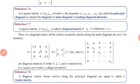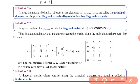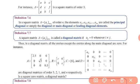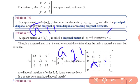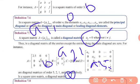Definition of a diagonal matrix: In a square matrix A = [aij], the matrix is called a diagonal matrix if aij = 0 whenever i ≠ j. That means when i = j, the entries a11, a22, a33 are retained, and all remaining entries where i ≠ j are equal to zero.